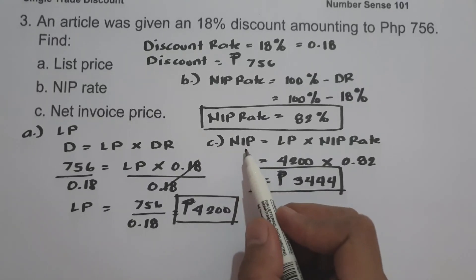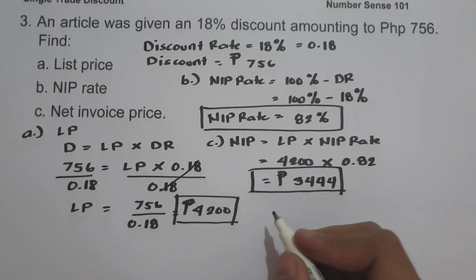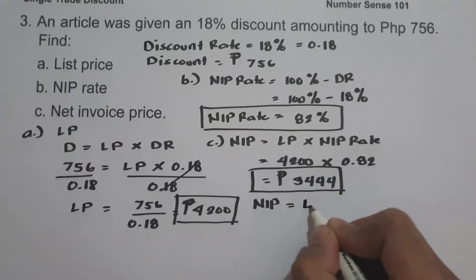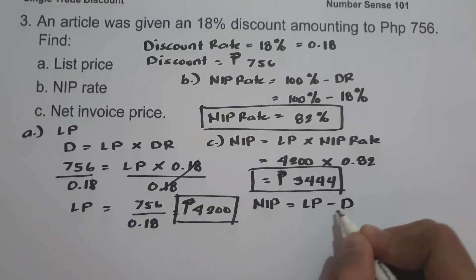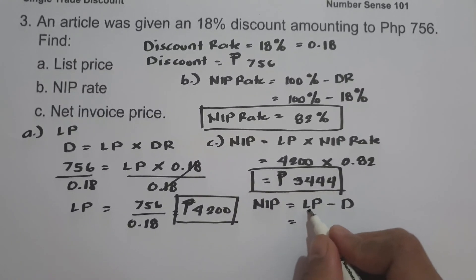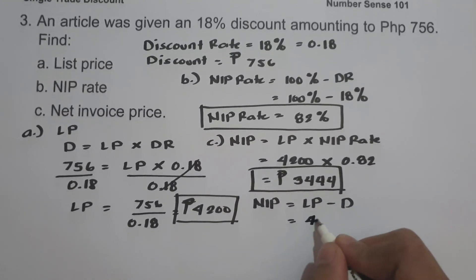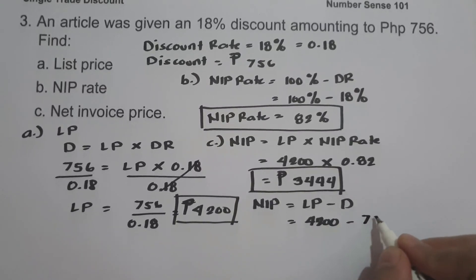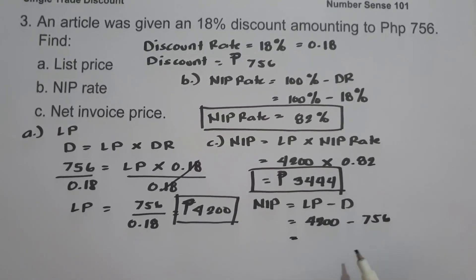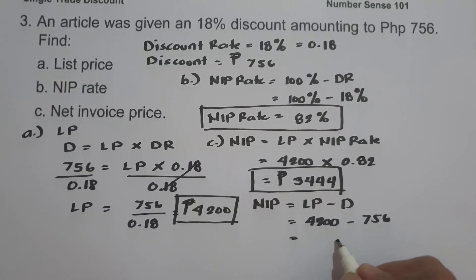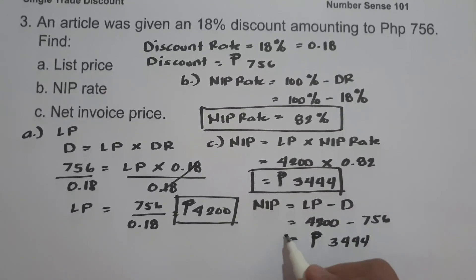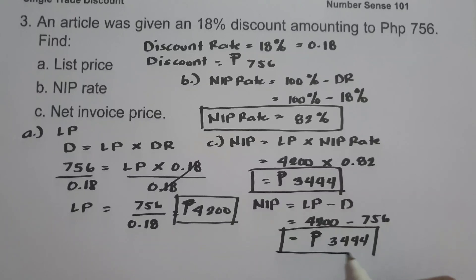We can also find the NIP using the discount: NIP equals list price minus the discount. Four thousand two hundred minus seven hundred fifty-six equals three thousand four hundred forty-four pesos. We come up with the same answer.